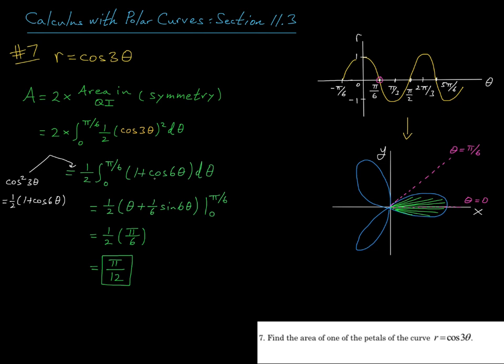And now I'm left to integrate 1 plus cosine of 6 theta. So that's theta plus 1 sixth sine of 6 theta. And then evaluate at 0 and at pi over 6. Subtract and simplify, we get pi over 12 for the area of one of the petals.